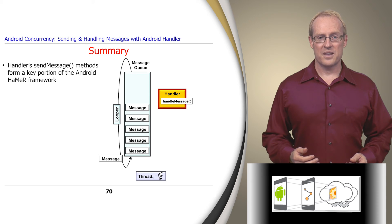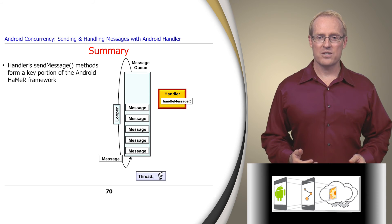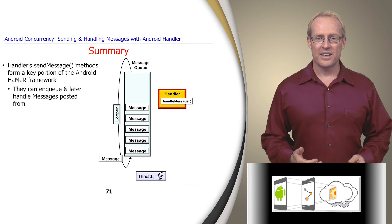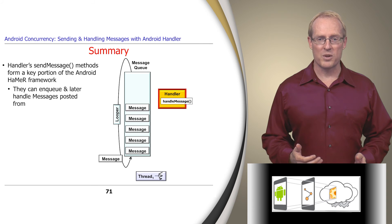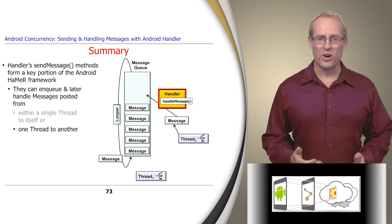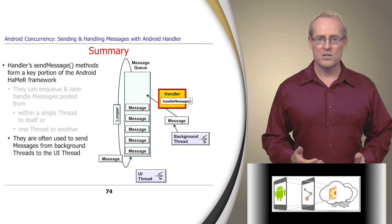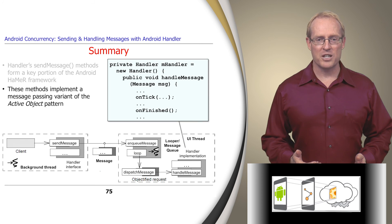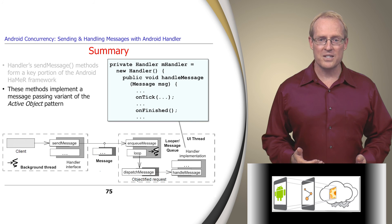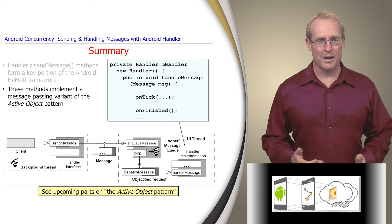In summary, the sendMessage methods in the handler class form another key portion of the Android Hammer framework. They provide the means to enqueue and later handle messages sent from within a single thread to itself or passed from one thread to another. They're often used to send messages from one or more background threads to the user interface thread. The collaboration between the handler's sendMessage methods and the messageQueue and looper classes implements the message-passing variant of the active object pattern, as described in upcoming videos.